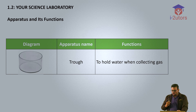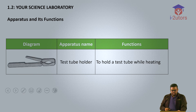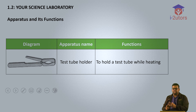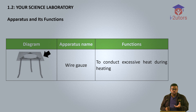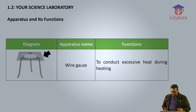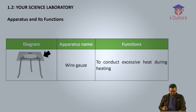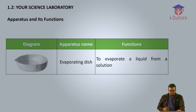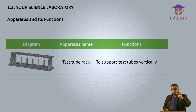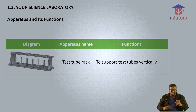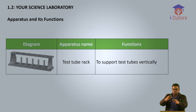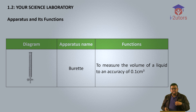Number 11, the round bottom flask — to hold chemicals used in the preparation of gas which involves heating. Number 12, the trough — to hold water when collecting gas. Number 13, the test tube holder — to hold a test tube while heating it. Number 14, the wire gauze — placed on a tripod stand where you place something on top for the heating process; its function is to conduct excessive heat during the heating process. Number 15, the evaporating dish — to evaporate a liquid from a solution. Number 16, the pipette — also used to measure liquid but in a very small amount and it is accurate. Number 17, the test tube rack — to support the test tube vertically.